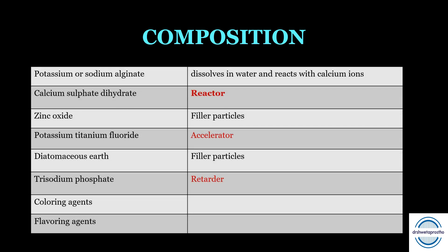Composition of alginate: potassium or sodium alginate is around 15% — it dissolves in water and reacts with calcium ions, actively participating in the setting reaction. Calcium sulfate dihydrate is around 16% — it is the main reactor that reacts with potassium or sodium alginate to form an insoluble alginate gel. Zinc oxide filler particles improve properties and setting time. Potassium titanium fluoride is the accelerator that counteracts the inhibiting effect of the hydrocolloid on setting of stone, ensuring good cast surface quality. Diatomaceous earth filler particles control consistency and flexibility of the set material.